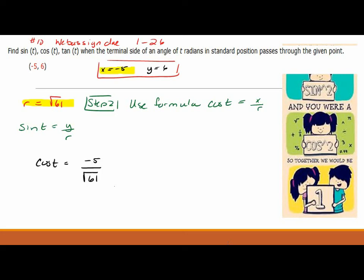So you plug and chug. Cosine t is negative 5 over square root of 61. Where did I get those two numbers from? The x value was negative 5. I just highlighted it. And the radius was square root of 61. I just highlighted it. And I plugged them into the formula. Sin t is 6 divided by square root of 61. By plugging them into the formula. They are highlighted in pink, so you see where I got them from. I believe they want you to get tangent t, too, as well.